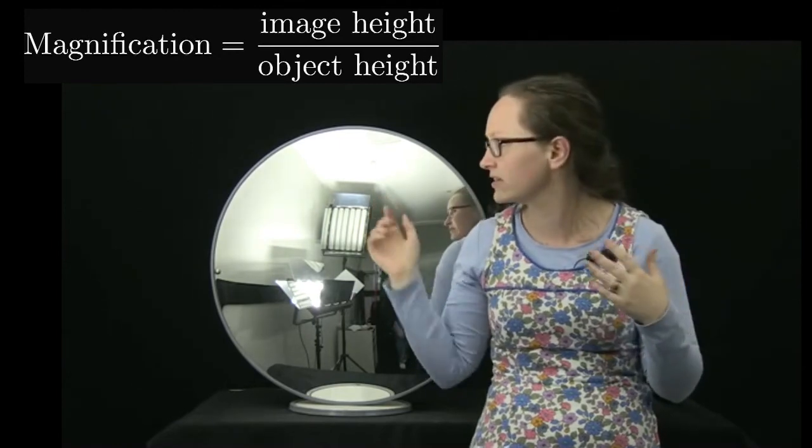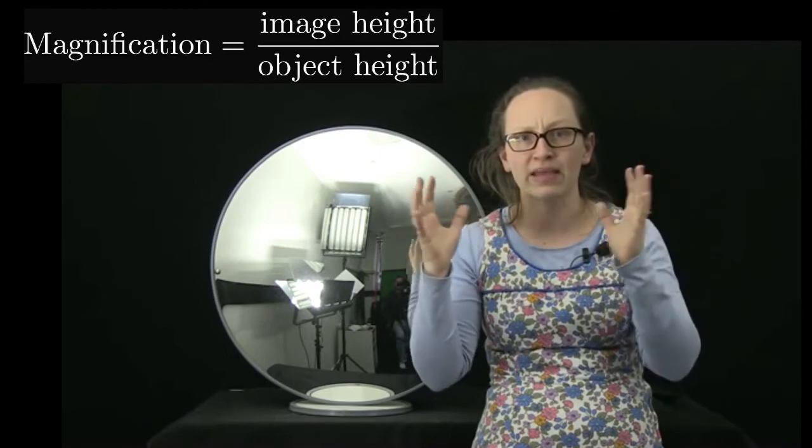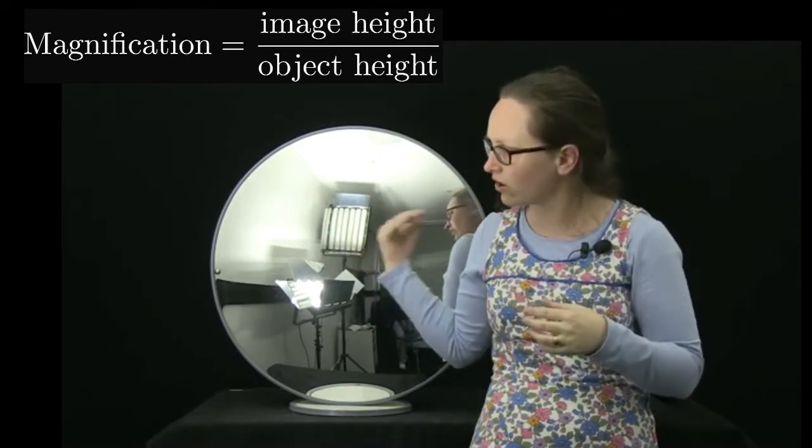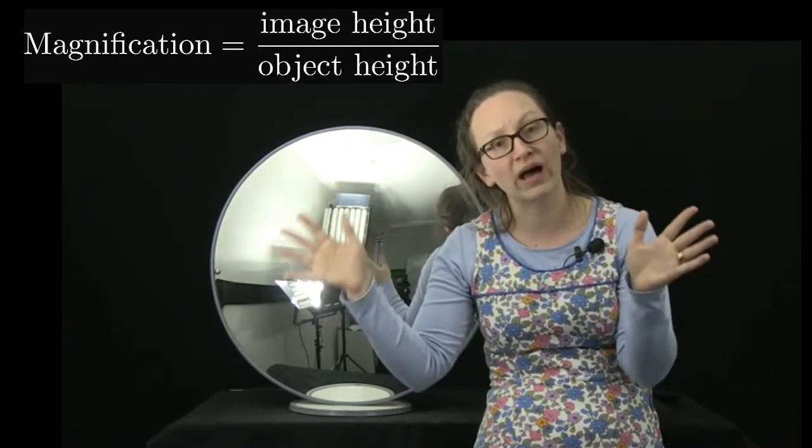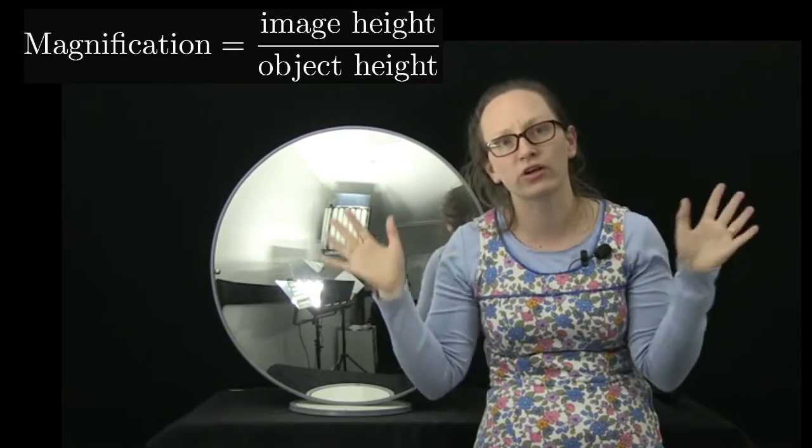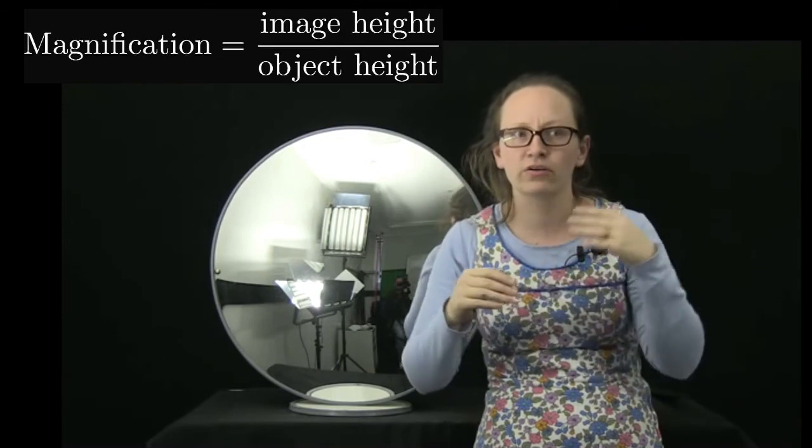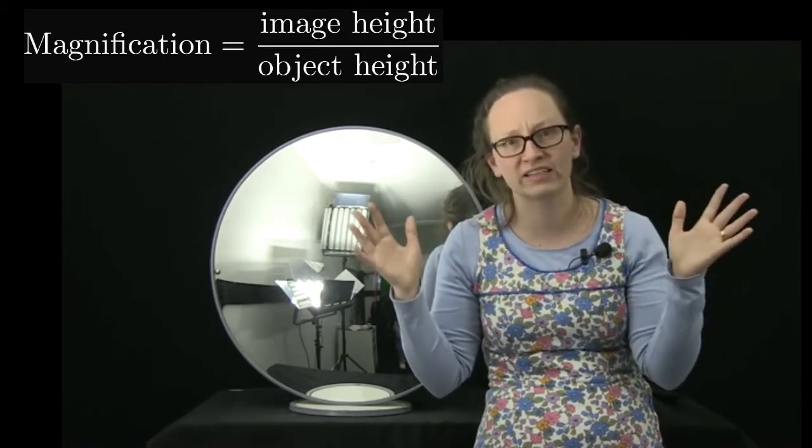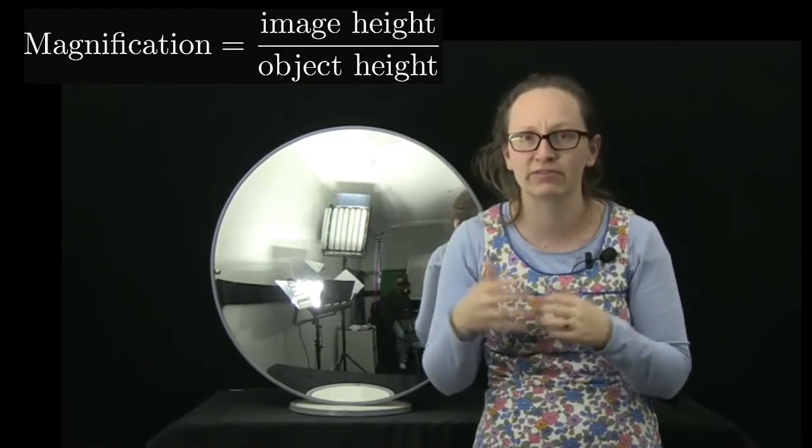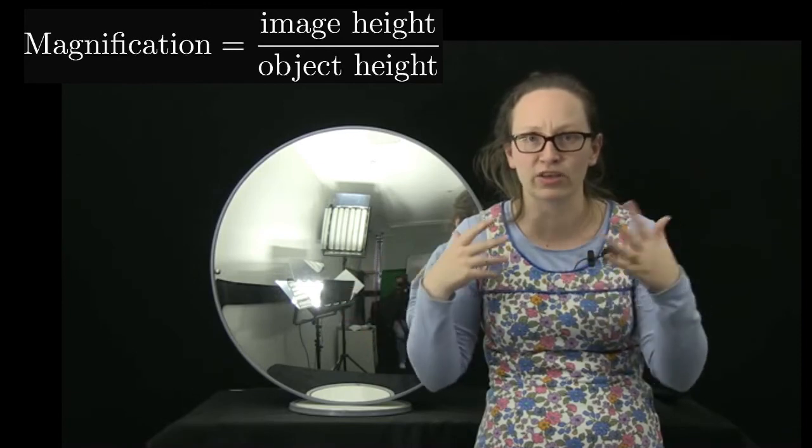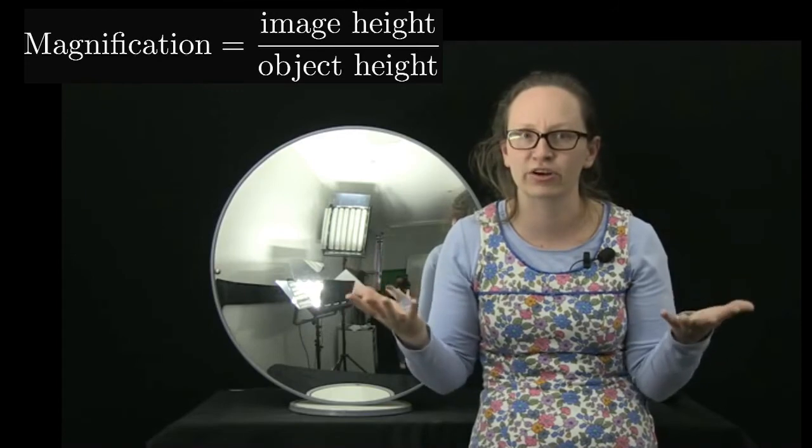Now, convex mirrors such as this one have a magnification between 0 and 1, showing that they're making images smaller. So with a convex mirror like this, this lets it see a wider field of view, which is why they're used as side mirrors for the cars. So concave mirrors have a much wider range of magnification. And it depends where the object is in relation to the focal point and the center of curvature of the lens as to what the magnification is going to be.